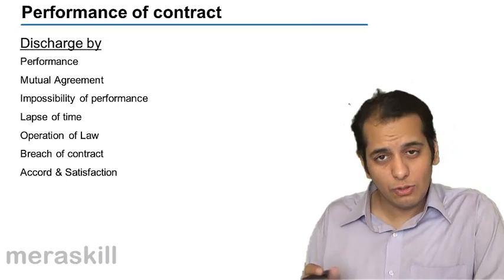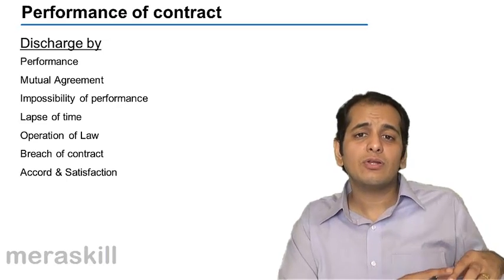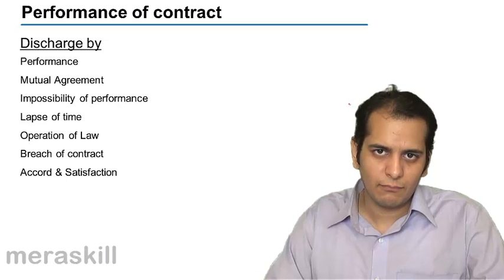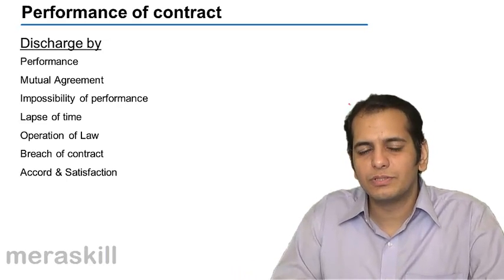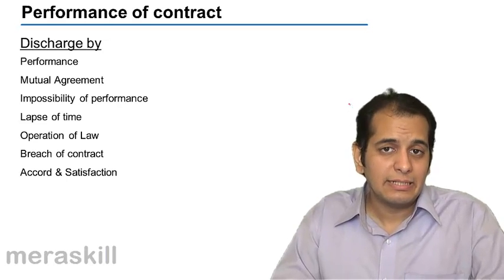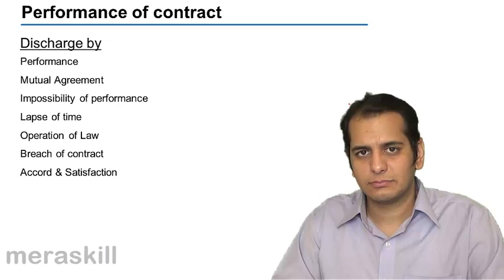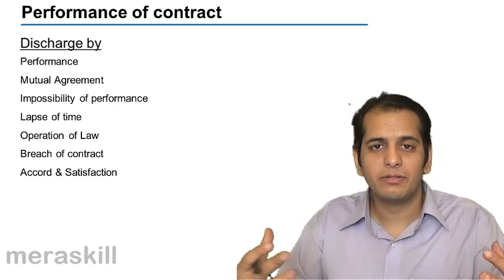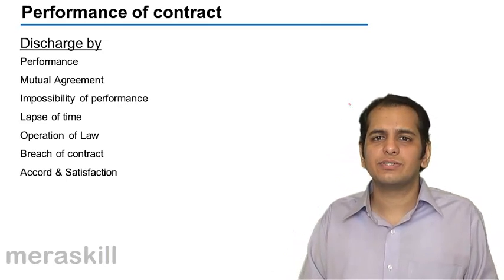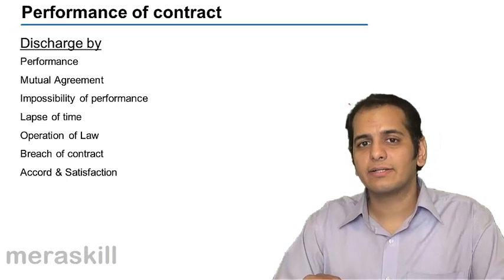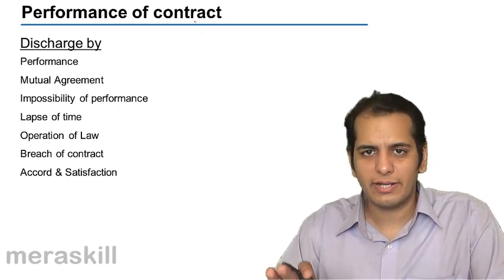The next is operation of law — the contract lapses by operation of law. Operation of law means where the law comes into picture. For example, if two parties are in a contract and one of the parties dies, or if either of them becomes insolvent, the contract gets discharged by operation of law. The law comes into force and the contract gets discharged.